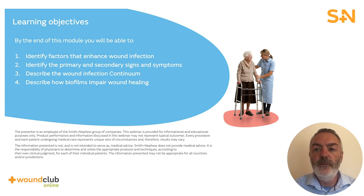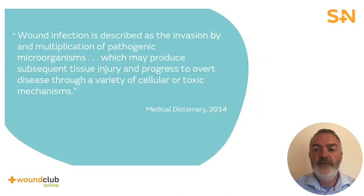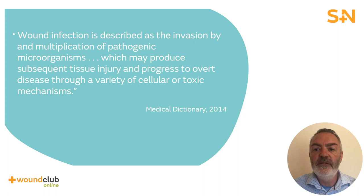By the end of this module you will be able to identify the factors that enhance wound infection, identify the primary and secondary signs and symptoms in acute and chronic wounds, describe the wound infection continuum, and describe how biofilms impair wound healing. Wound infection has been described as the invasion by and multiplication of pathogenic microorganisms which may produce tissue injury and which may progress to overt disease through a variety of cellular or toxic mechanisms. Infection results in a prolonged inflammatory phase; bacteria compete with other cells for oxygen and nutrients on the wound bed, interfering with the healing process and potentially causing further problems.